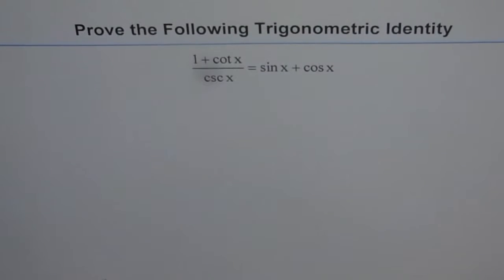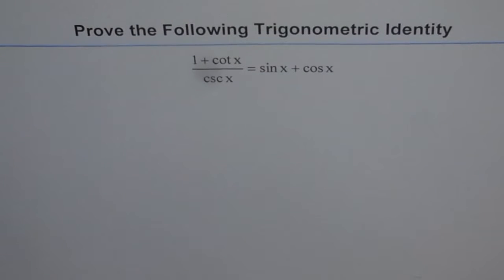Prove the following trigonometric identity: 1 plus cot x divided by cosecant x equals sin x plus cos x.